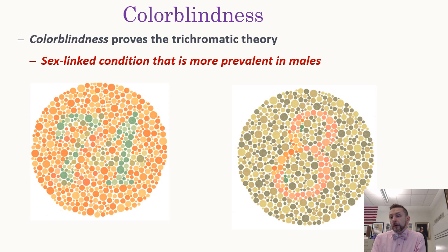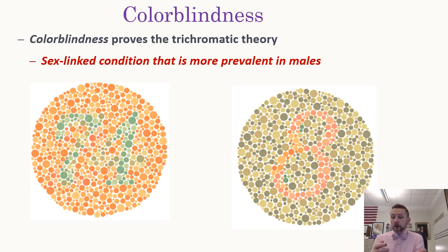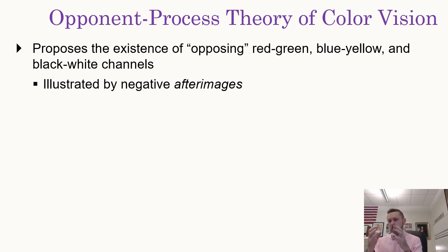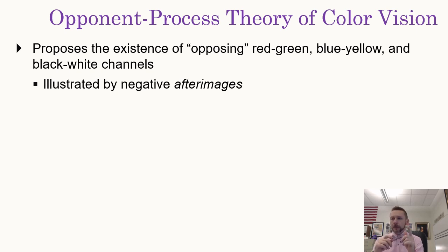Color blindness helps prove the trichromatic theory. If you can't see green or red, you must be deficient in the cone response rates for those two colors. Color blindness is most prevalent in males, implying it's a sex-linked condition linked to the chromosomal contribution that only occurs in men — the Y chromosome. Another theory of color vision is known as opponent process. The idea behind this theory is that there are opposing pairs of colors — red/green, blue/yellow, and black/white — and those opposing pairs produce our color vision.